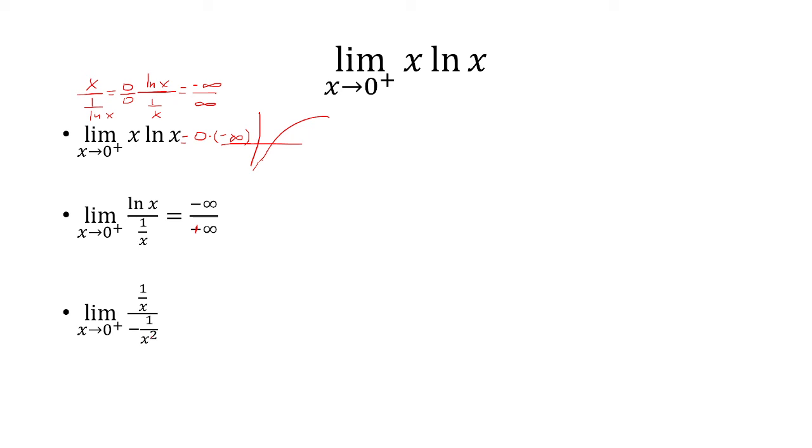As you can see, this is a lot nicer to simplify versus if we chose the first way of x over 1 over ln of x.